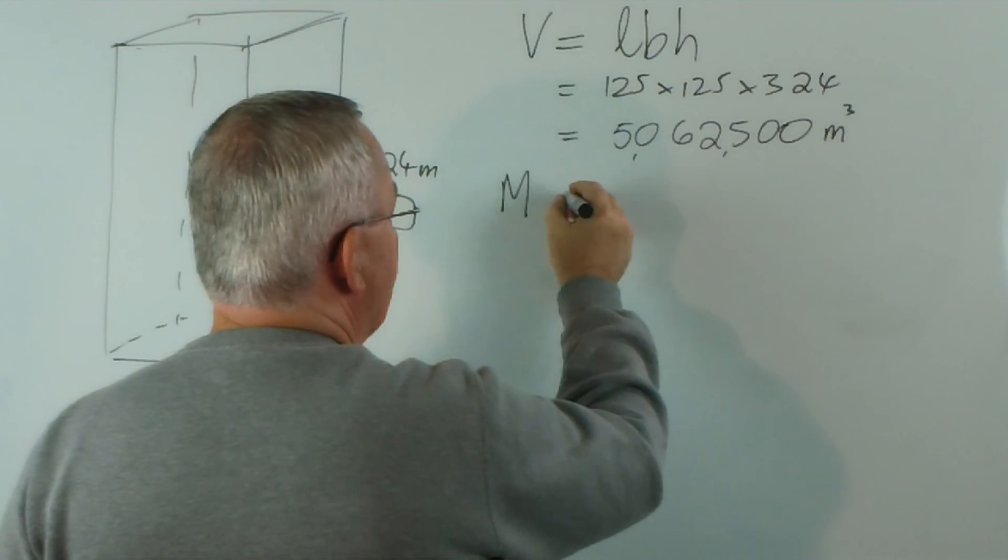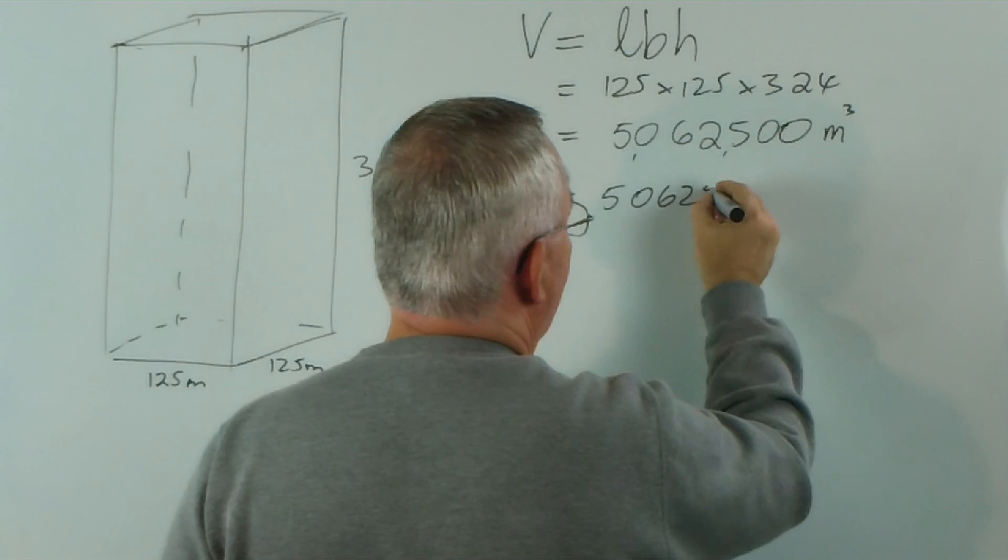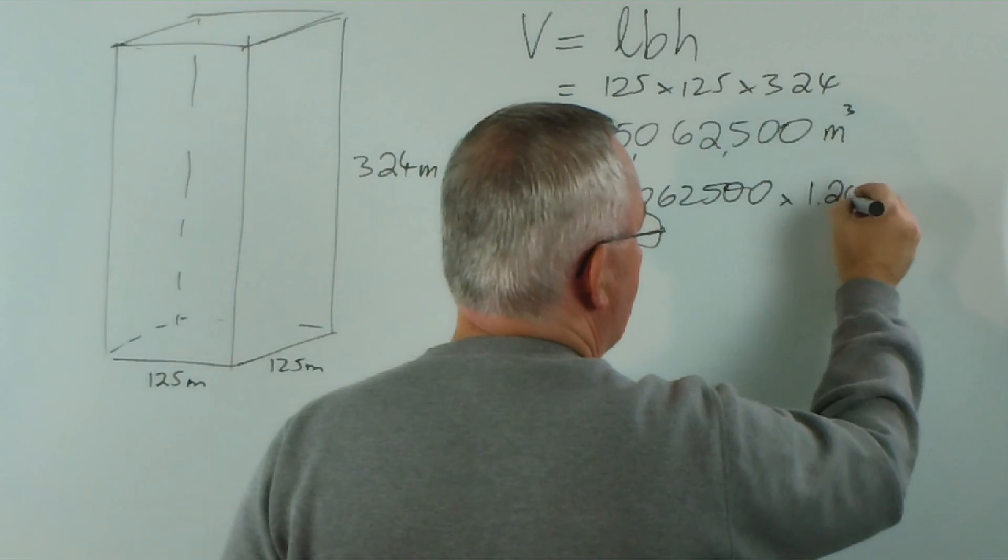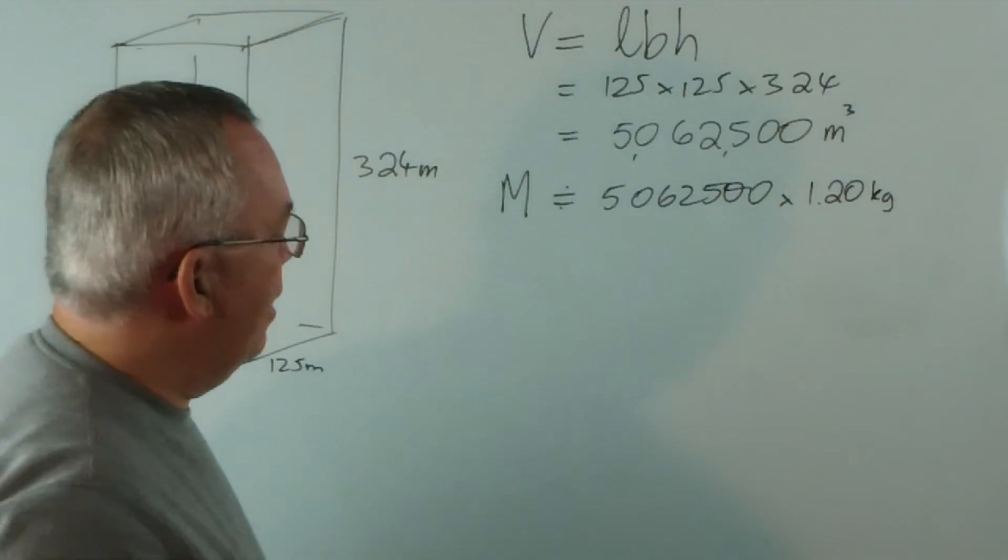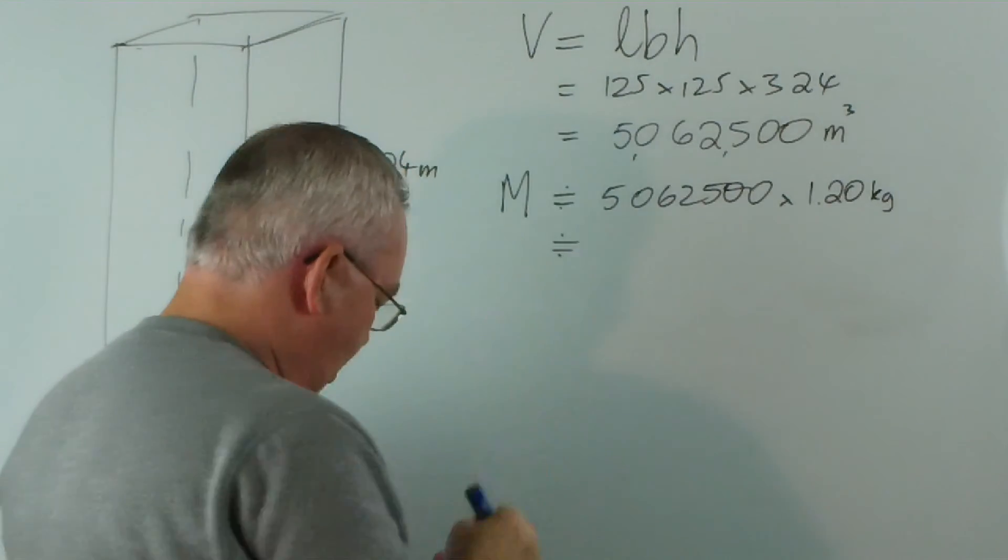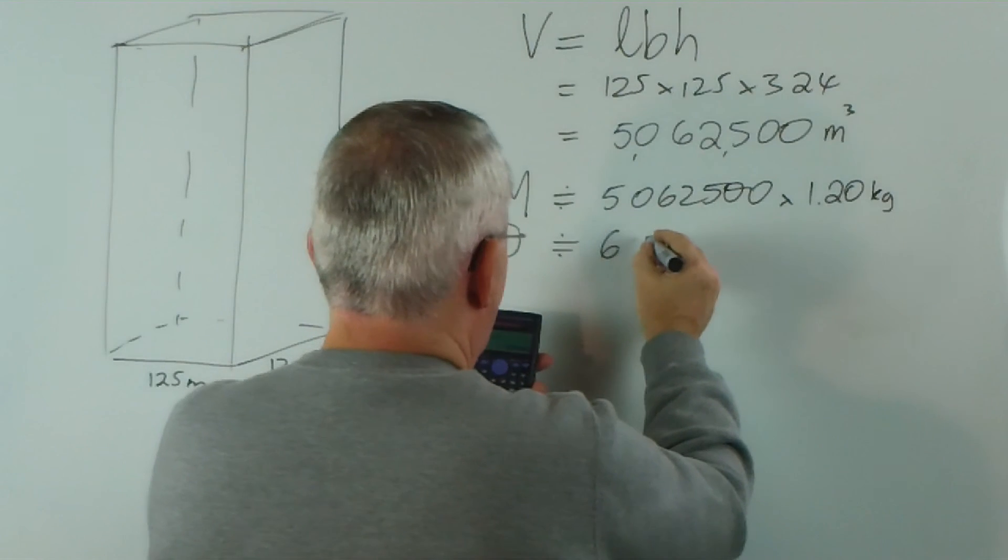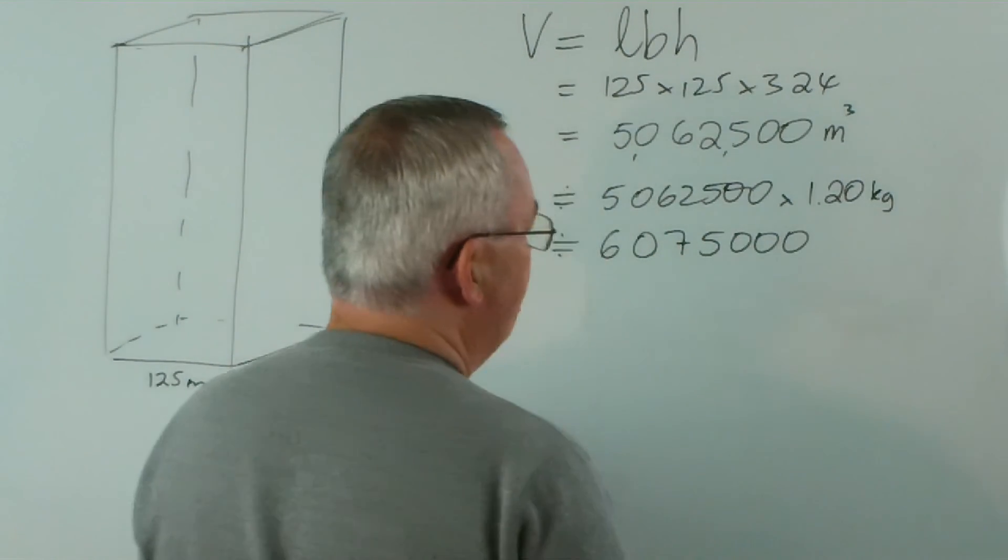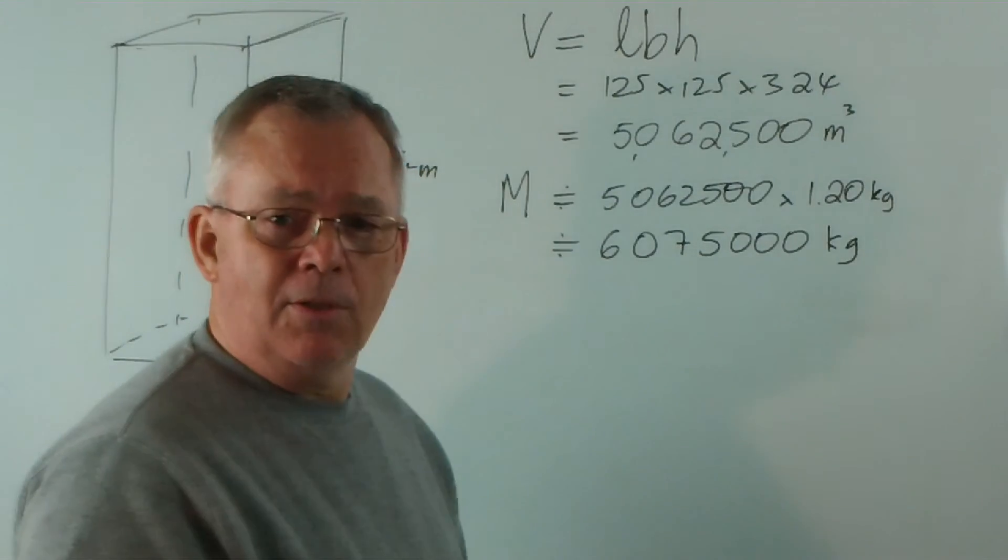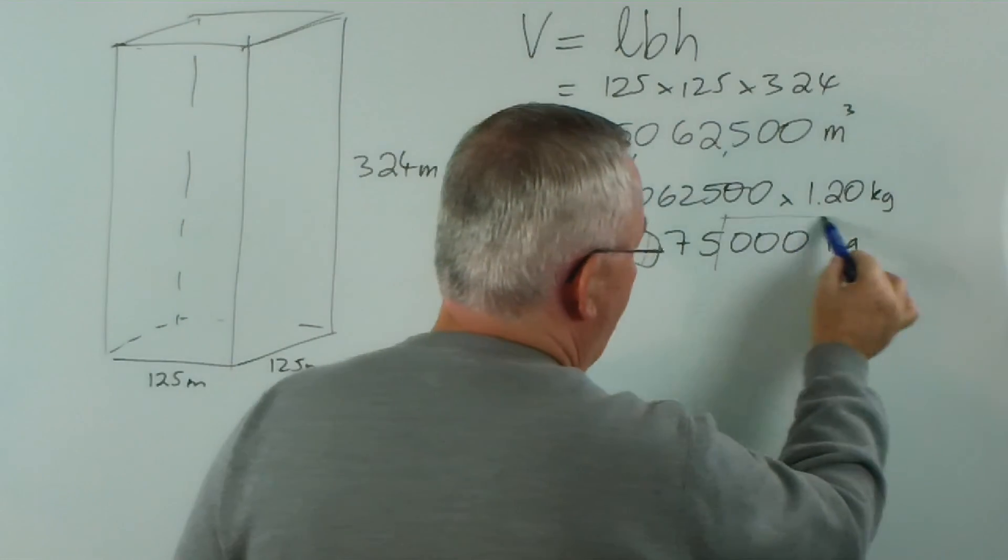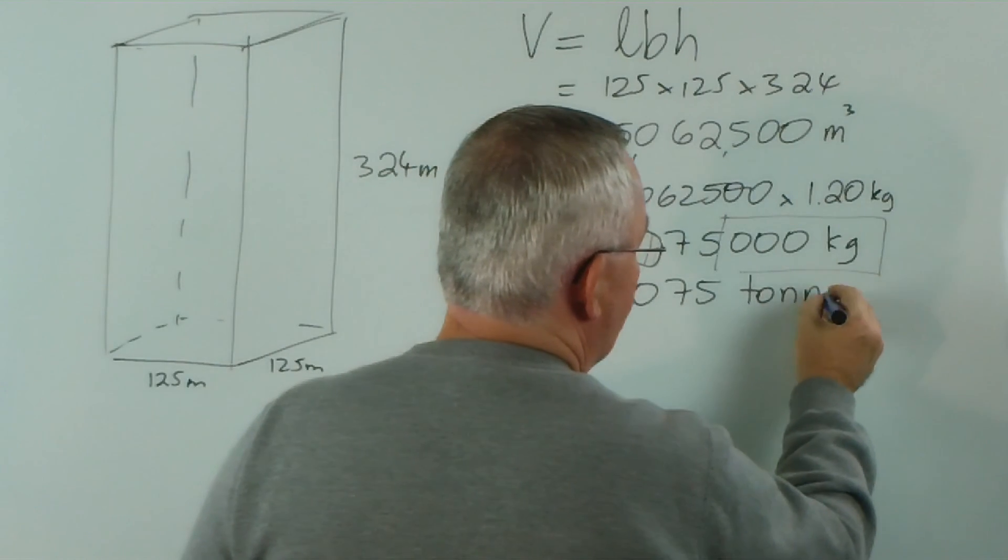So the mass of this air is going to be this volume by 1.20 kilograms — roughly. I should say these are rough as well. So I multiply by 1.2 and I get 6,075,000 kilograms. And you might remember how many kilograms make a tonne. A thousand! So it is 6,075 tons of air!